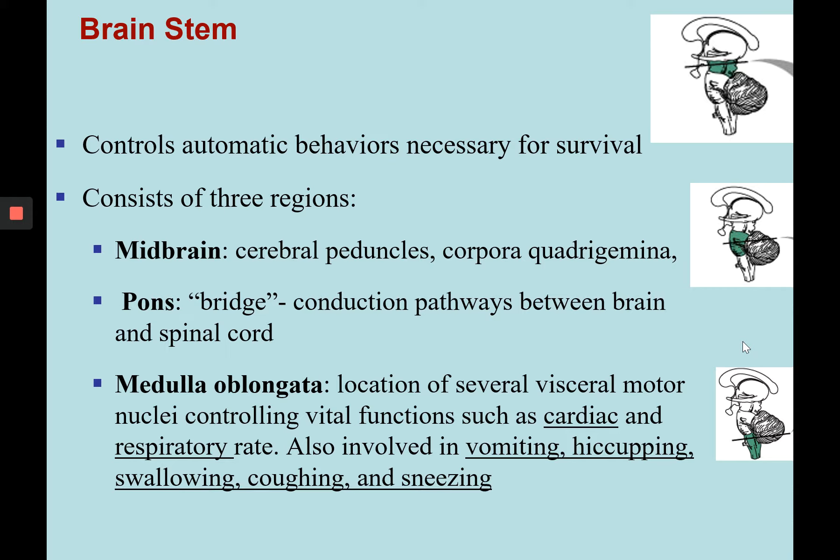The pons contains many conduction pathways or fibers that act as a bridge between the midbrain and the medulla oblongata. Whereas the medulla oblongata is the location of several visceral motor nuclei controlling vital functions such as cardiac and respiratory rate, as well as vomiting, hiccuping, swallowing, coughing, and sneezing.